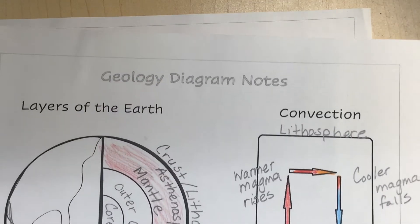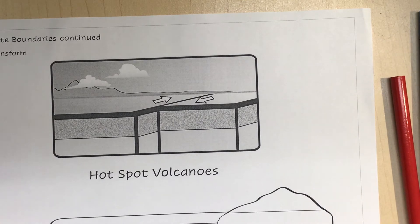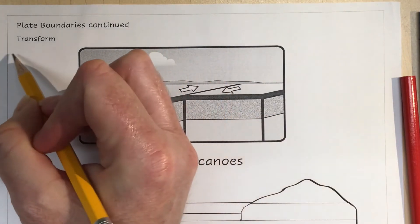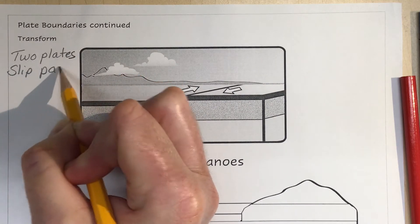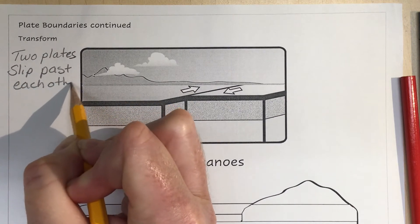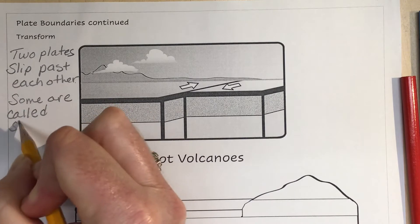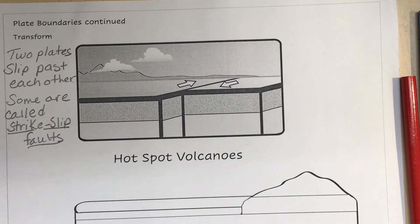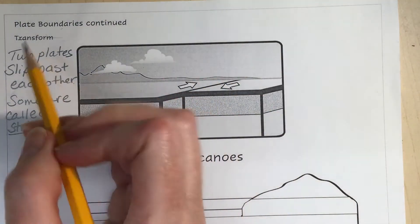Continuing with geology notes on page three, this is the third type of plate boundary: the transform plate boundary. We're not going to draw magma here because it doesn't come into play. The two plates slip past each other. Some of them are called strike-slip faults — I've seen that term on the AP test, so make sure you know it — but most of the time they're called transform plate boundaries.